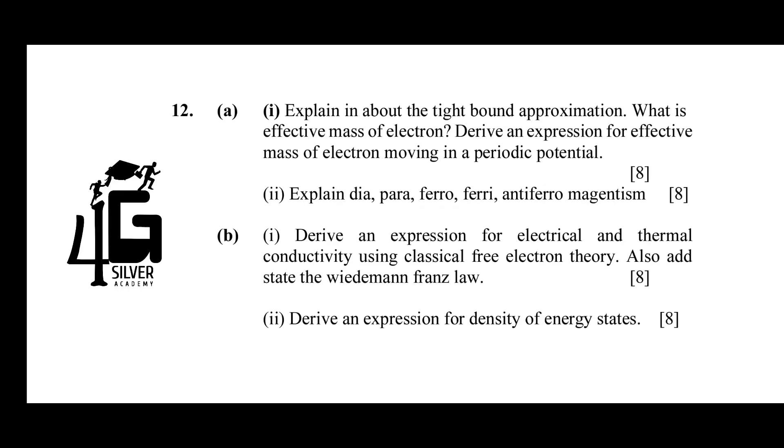Next, twelfth question. Explain in about the tight bound approximation. What is effective mass of electron? Derive an expression for effective mass of electron moving in a periodic potential. Explain dia, para, ferro, ferri, anti-ferromagnetism.